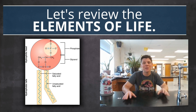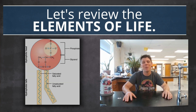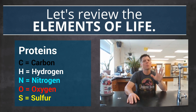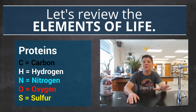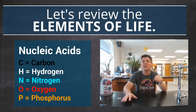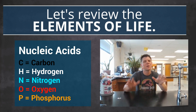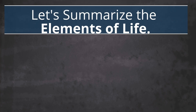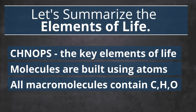Phospholipids also have phosphorus and are the key component of cell membranes. Proteins are made of carbon, hydrogen, nitrogen, oxygen, and sulfur — proteins do not contain phosphorus. Nucleic acids are made of carbon, hydrogen, nitrogen, oxygen, and phosphorus — nucleic acids do not contain sulfur. By using these six elements, rock pocket mice and kangaroo rats are able to build the molecules that allow them to survive in the harsh deserts they call home.